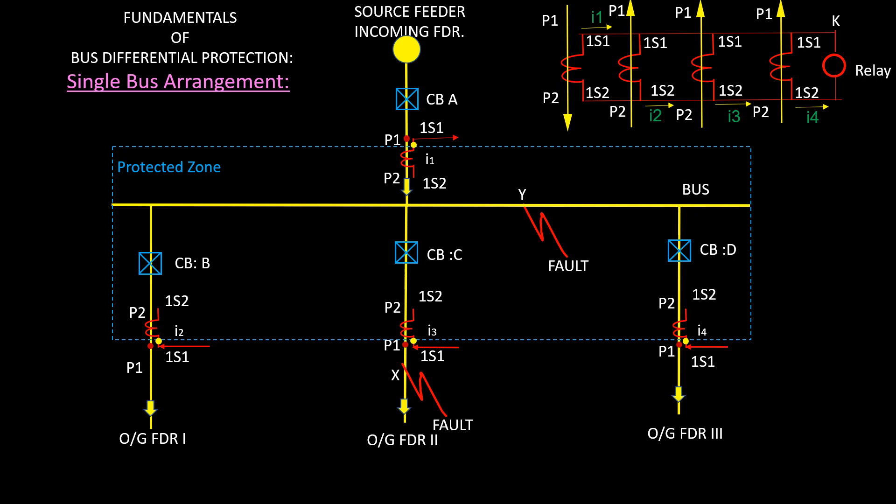So protection from bus fault in an electrical system is mandatory, especially for large substations with a double bus system where fault level is very high. In case one bus goes to shutdown due to fault occurrence, another bus will remain active. Therefore, a total power block will not happen.